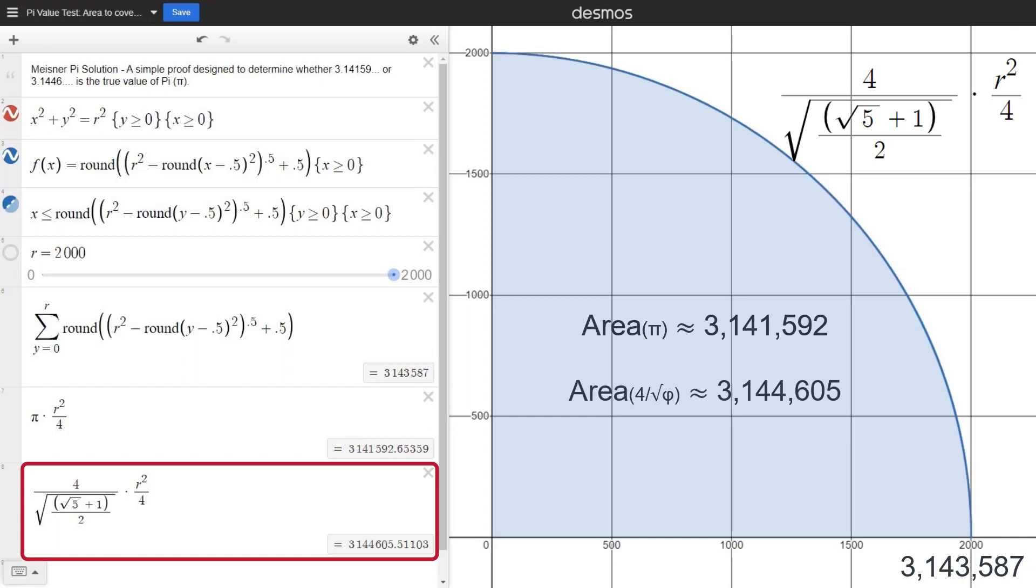The quarter circle's area according to new pi is slightly more than the complete coverage area, at about 3,144,605.